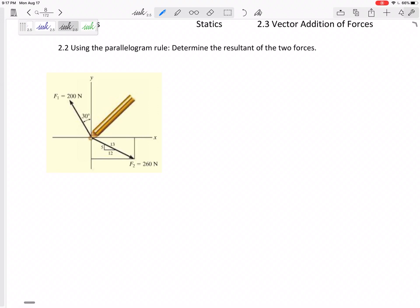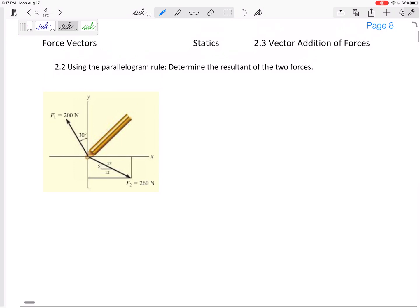All right, so let's look at this last problem for using the parallelogram rule to add vectors. We want to add these two vectors. One's at 200 at 30 degrees from that angle, one's at 260 at this 5, 12, 13.